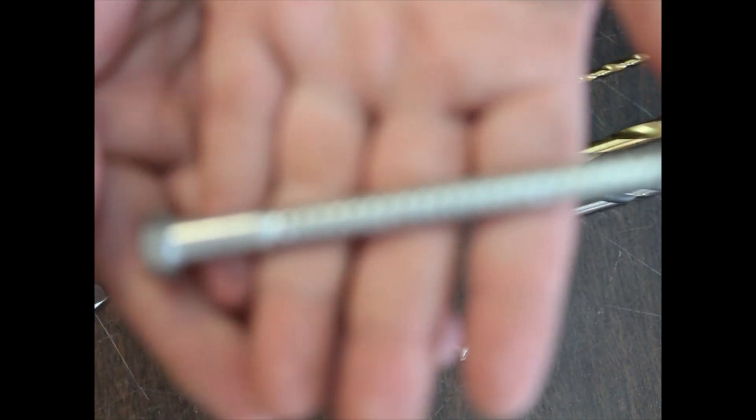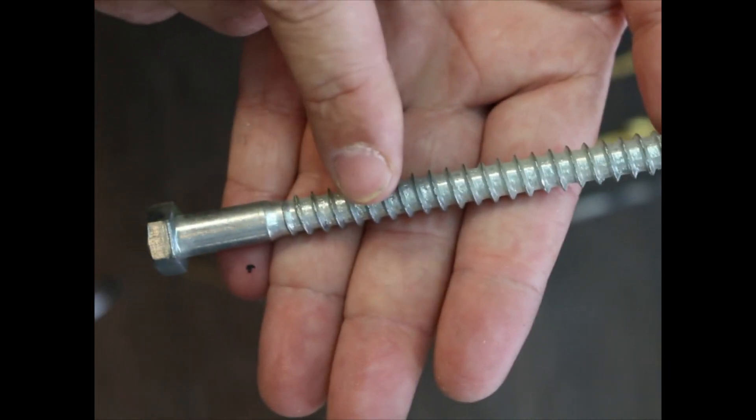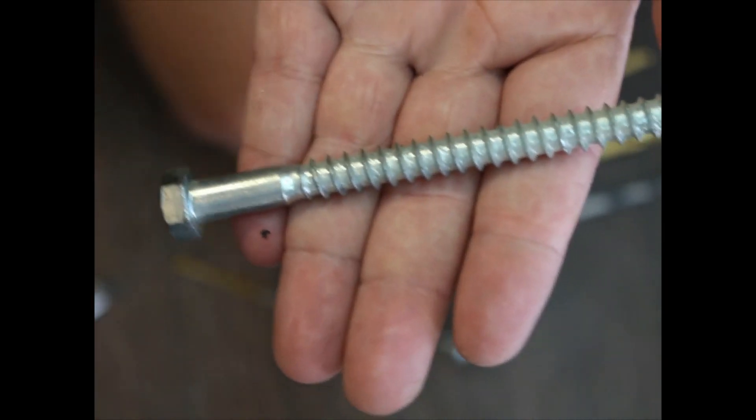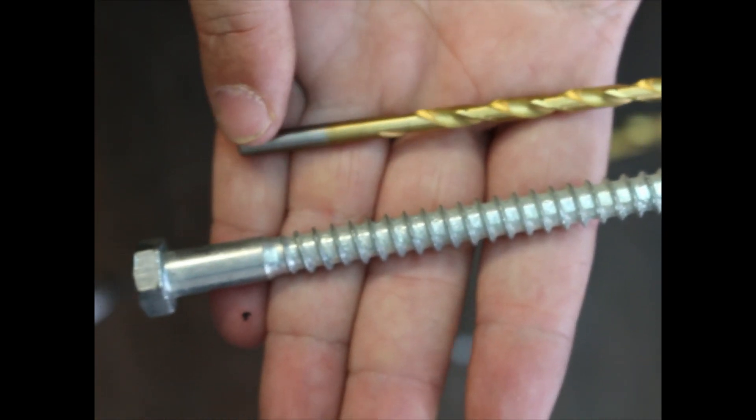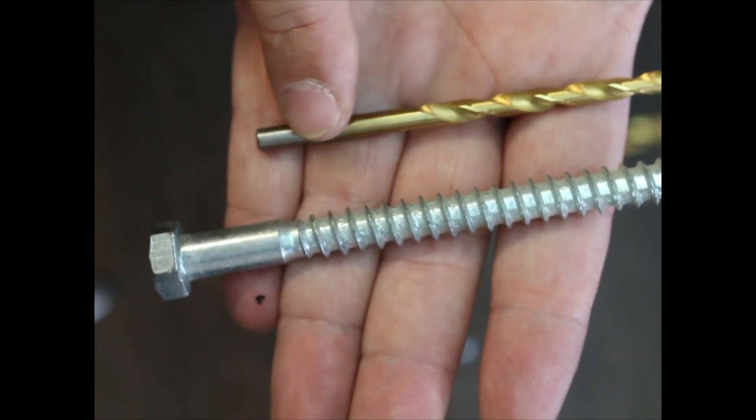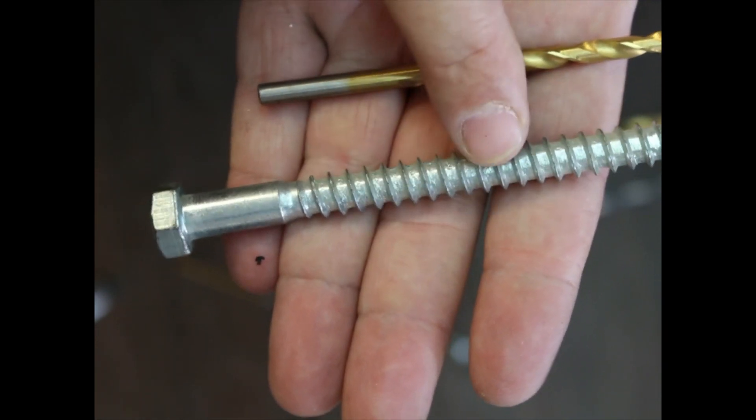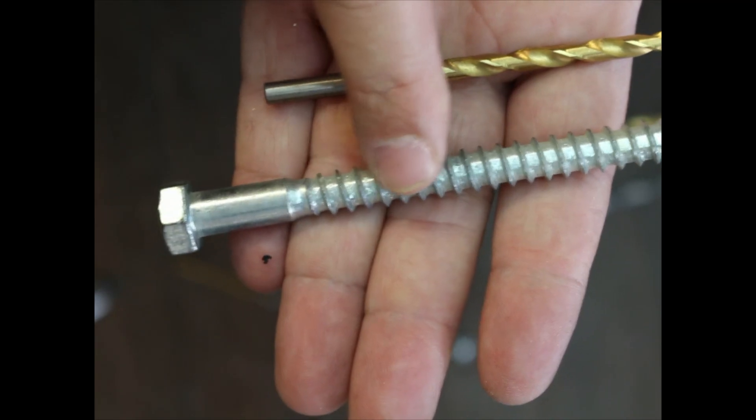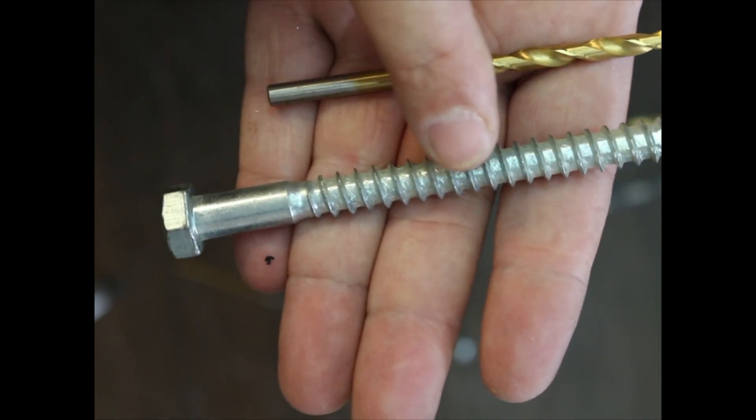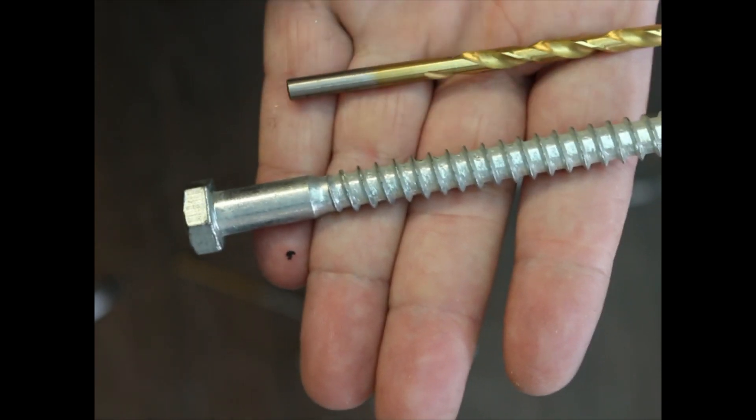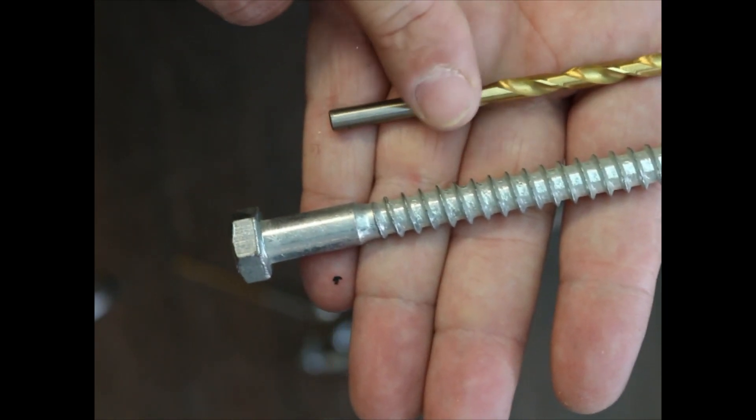Whenever you're pre-drilling any kind of hole for any kind of screw, what you want to do is find a drill bit matching the core of the screw. The core is the part inside the threads—that metal between the threads, a little bit smaller than the threads themselves. You want to find a matching drill bit.